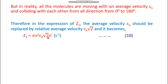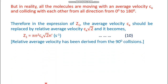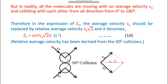The relative average velocity is derived from 90-degree collisions. Suppose one molecule approaches with average speed CA along one direction, and another molecule also has speed CA but approaches at exactly 90° to the first. After collision they go back along their respective directions. Taking the resultant vector of the two CA values at 90° gives CA√2 — a standard geometric result.